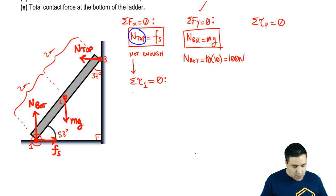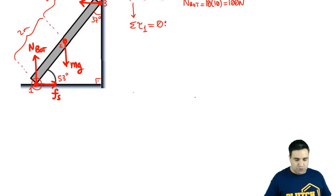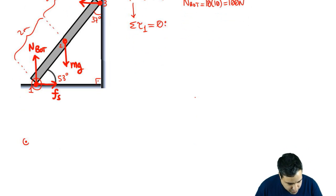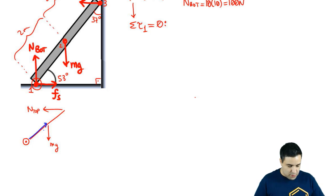Remember, you want to write the torque equation about a point with as many forces as possible so that you have as few terms as possible. There are two forces acting at point one. Only one force acting at point two. Point one is definitely the best one to write a torque equation about it. So some of all torques at point one equals zero. There are two torques there. I'm going to draw this. So here's point one. Here's the ladder. I have mg acting here. And then I have n top acting here.